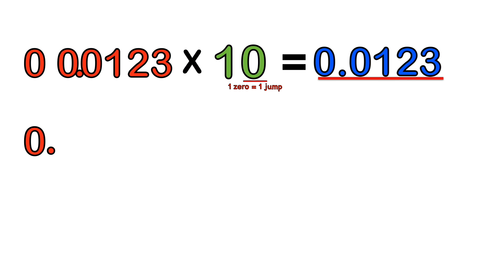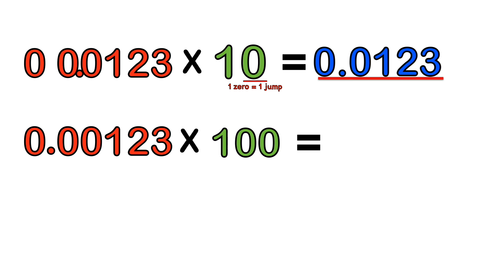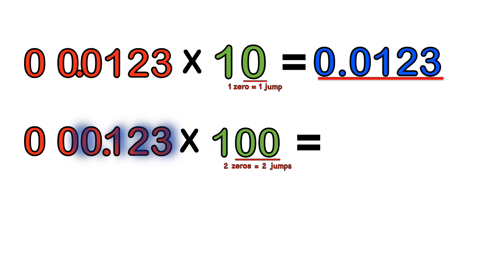What if we wanted to do 0.00123 times 100? Count the number of zeros: two zeros equals two jumps. Because we're multiplying, we jump to the right — one jump and another jump — and remove the decimal point. So the answer is 0.123.